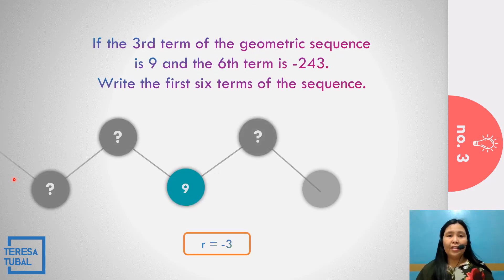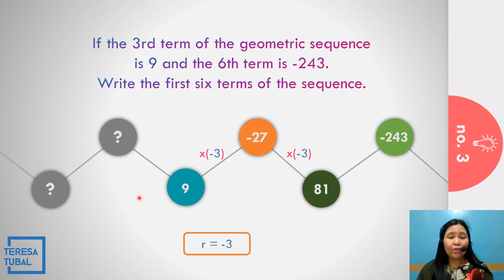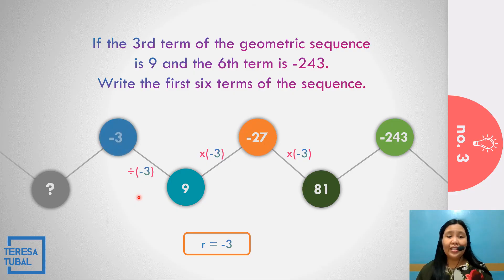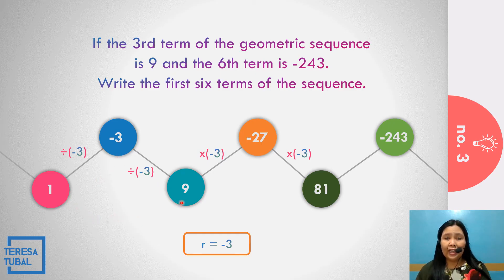With r equal to negative 3 and the third term being 9 and the sixth term being negative 243: multiplying right, 9 times negative 3 is negative 27, and negative 27 times negative 3 is positive 81. Going left, 9 divided by negative 3 is negative 3, and negative 3 divided by negative 3 is 1. So the first six terms of this sequence are 1, negative 3, 9, negative 27, 81, and negative 243.